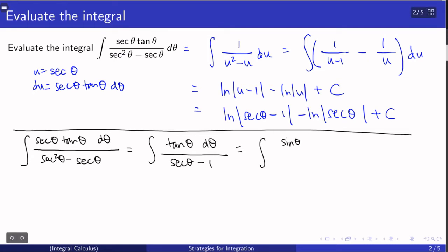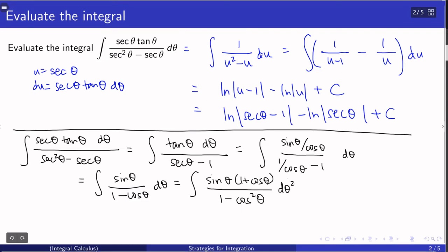So all trig functions can be written as sines and cosines. Alright, so tangent is sine over cosine. Secant is 1 over cosine. So we can multiply the top and the bottom by cosine. And then multiply the top and the bottom by 1 plus cosine. And this is something standard here, because what it allows me to do is to write the denominator as 1 minus cosine squared. Which, in turn, is just sine squared, meaning sine term cancels.